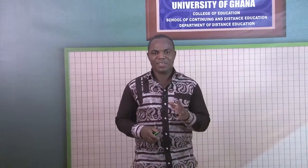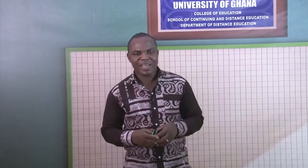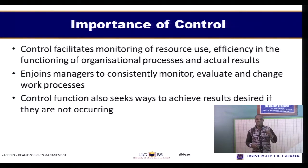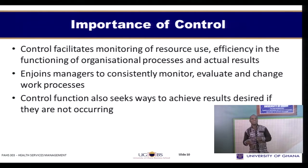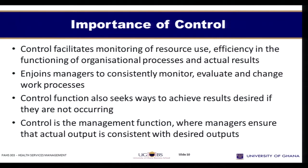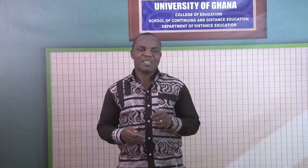This function also seeks to always achieve desired results if they are not occurring. In the event that organizations set out to achieve certain results and yet results are not occurring, control is the function that guides managers to ensure that results must be achieved. It provides a whip system — it serves as a whip to the management of any organization. Control is the management function that enables managers to ensure that actual work output or work results are consistent with what has been predetermined.